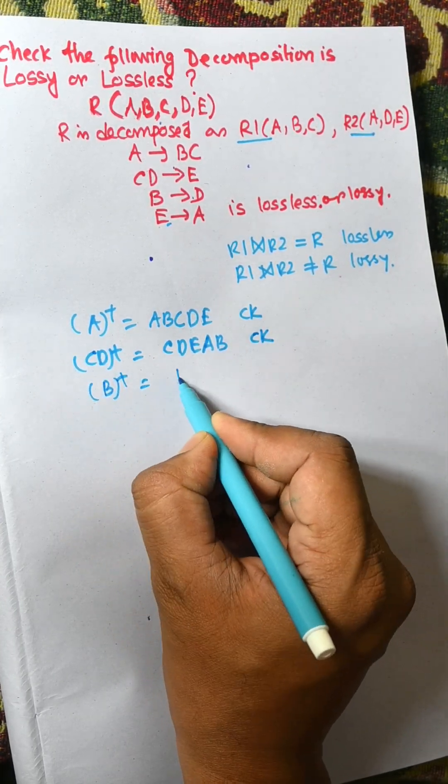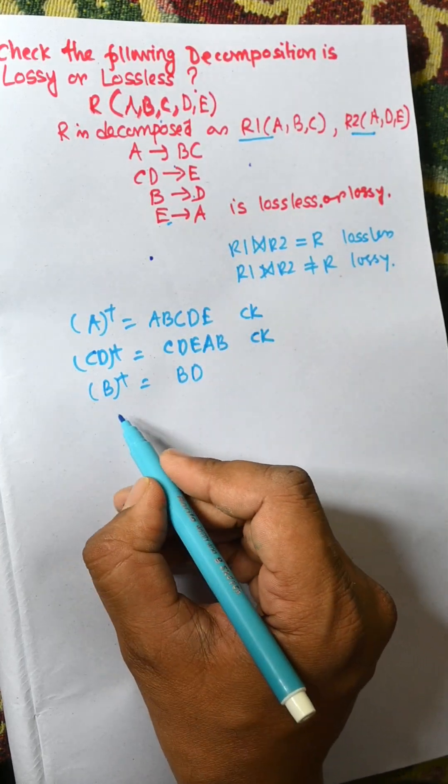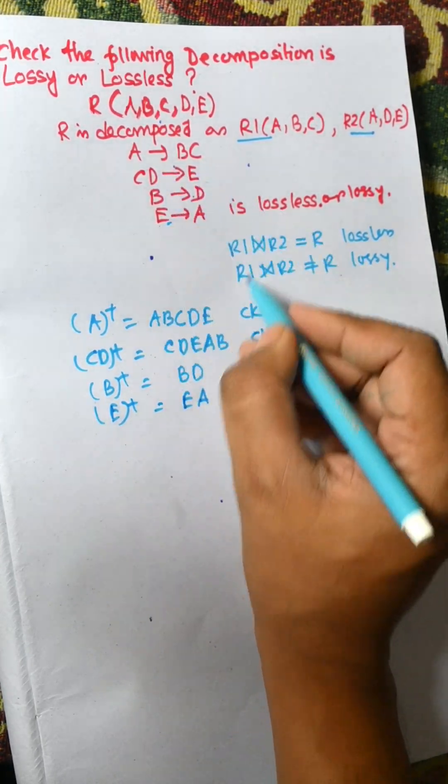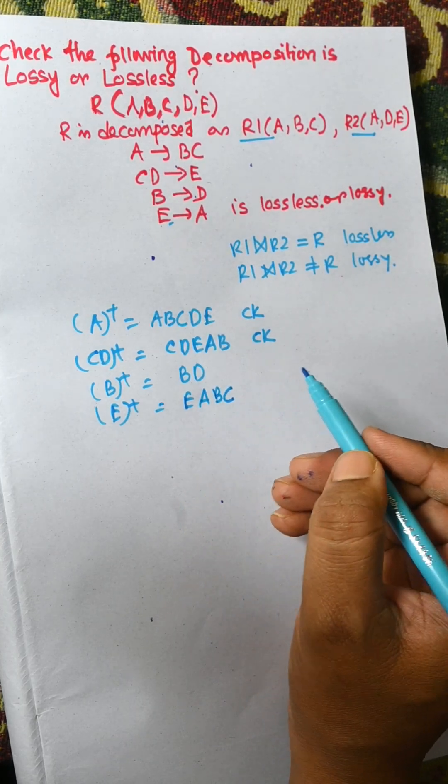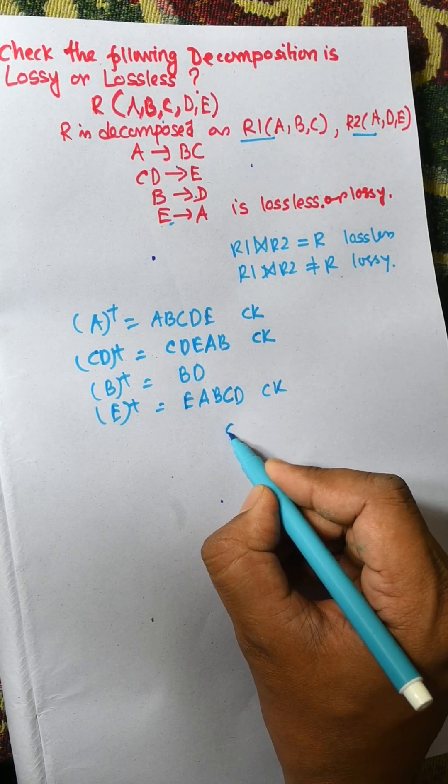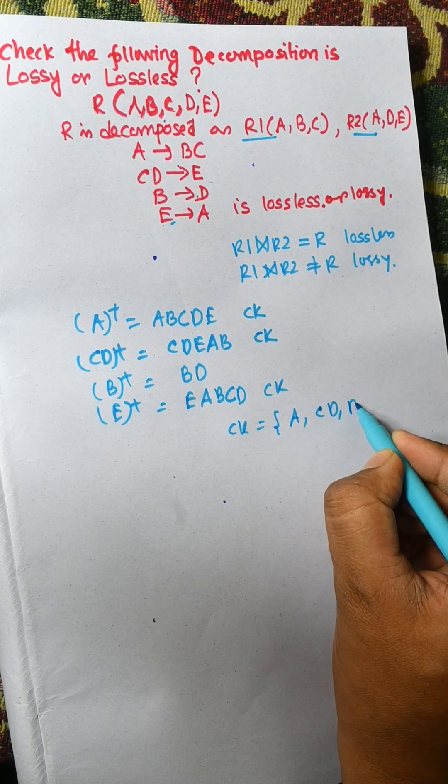Now B plus equal to BDE and no further expansion is possible. E plus equal to E to A, then A to BC, and from B to D. E is a candidate key. So candidate keys are A, CD, and E.